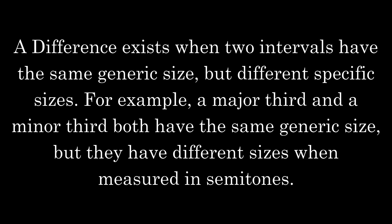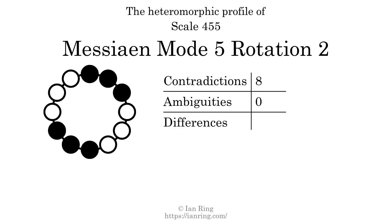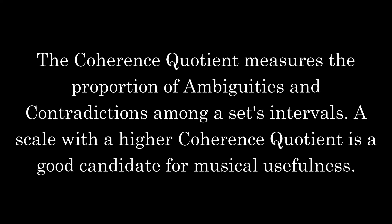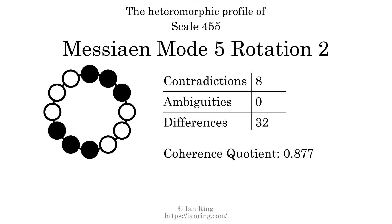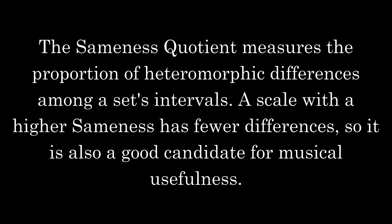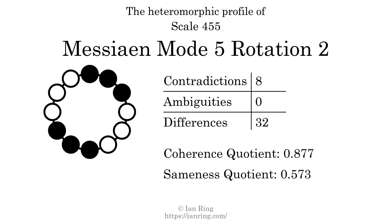A difference exists when 2 intervals have the same generic size but different specific sizes — for example, a major third and a minor third both have the same generic size, but they have different sizes when measured in semitones. The number of differences in this scale is 32. The coherence quotient measures the proportion of ambiguities and contradictions among a set's intervals; a scale with a higher coherence quotient is a good candidate for musical usefulness. The coherence quotient is 0.877. The sameness quotient measures the proportion of heteromorphic differences; a scale with a higher sameness has fewer differences. The sameness quotient is 0.573.